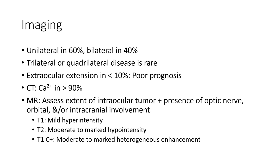Imaging: unilateral in 60 percent, bilateral in 40 percent. Trilateral or quadrilateral disease is rare. Extra-ocular extension in less than 10 percent carries a poor prognosis. CT calcification is present in more than 90 percent. MRI is used to assess extent of intraocular tumor and presence of optic nerve, orbital, and or intracranial involvement.